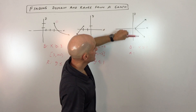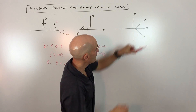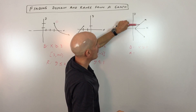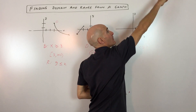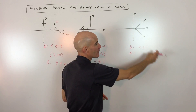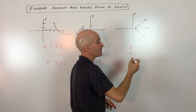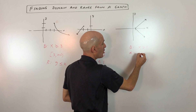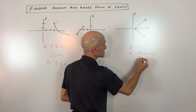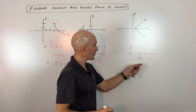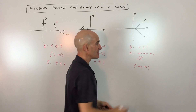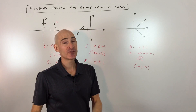For the range, we take our horizontal line and scan from low to high. Can y be down here? Sure — the graph keeps going down. Can y be zero, one, two? Yes, and it keeps going up and up. So the range goes from negative infinity to positive infinity — all real numbers. You can write that using the all-real-numbers symbol, or in interval notation as (−∞, ∞).